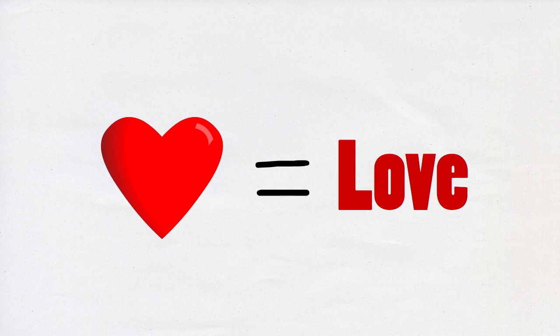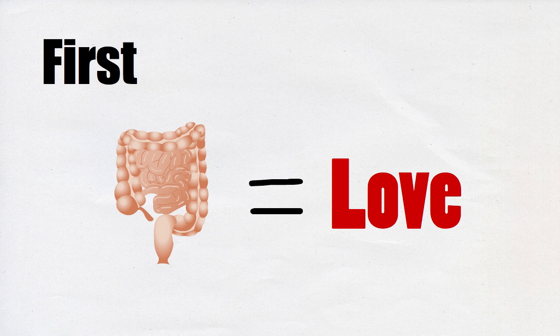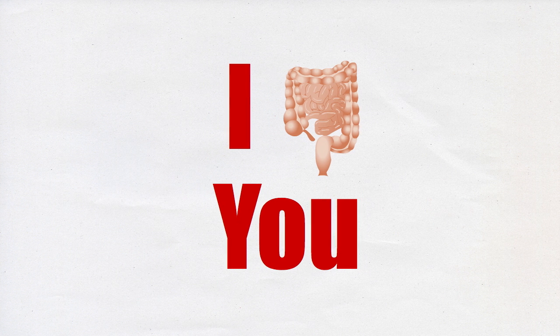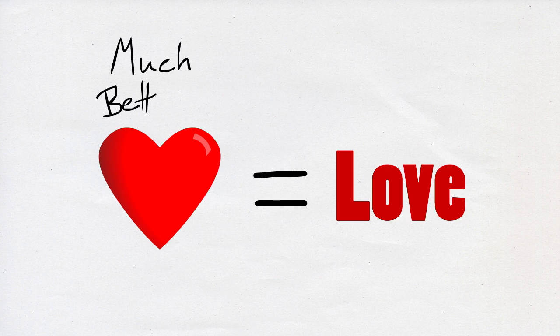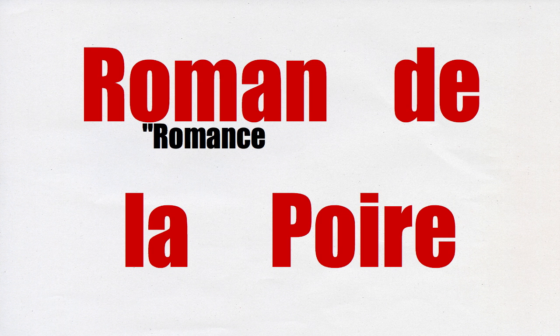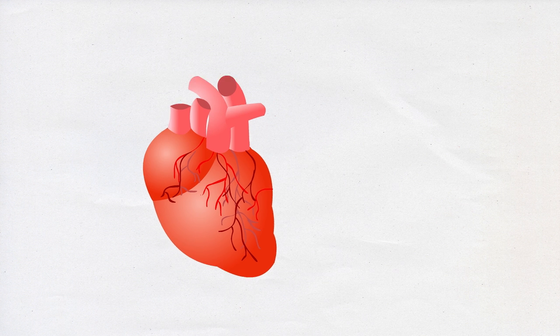First, it's important to realize that the heart wasn't always the center of our emotions. Many cultures throughout history considered the bowels to be the seat of emotions — imagine that card. It wasn't until the mid-13th century that we see the first use of the heart as a symbol of love, shown in the Roman de la Rose. But even then, the heart used in the picture resembles an actual human heart, not the one we use now.